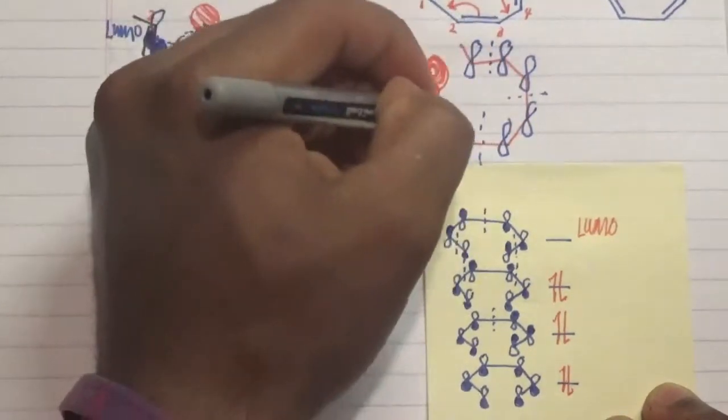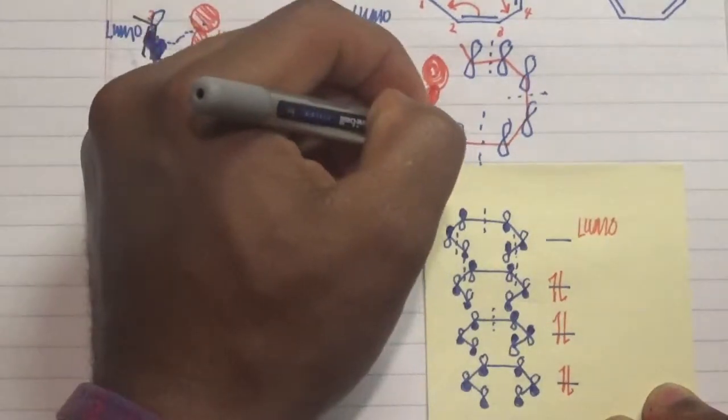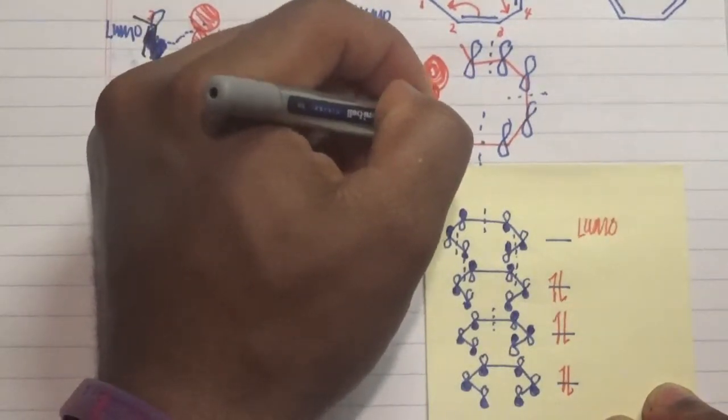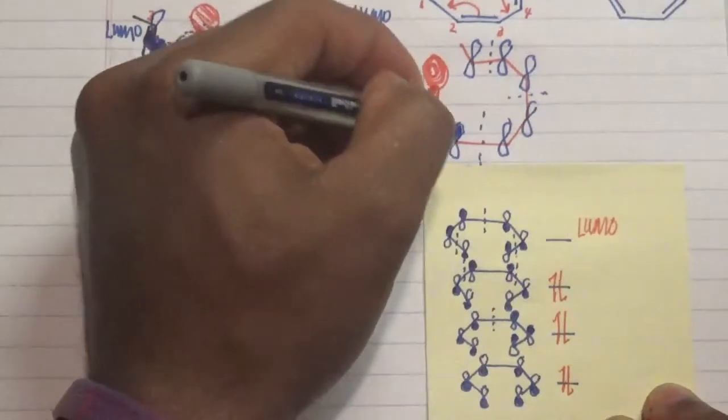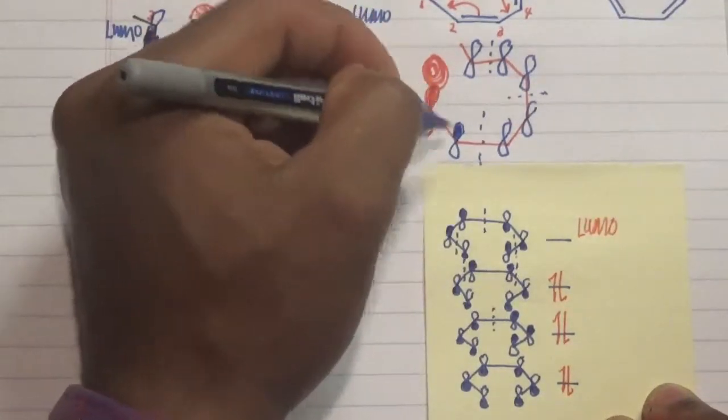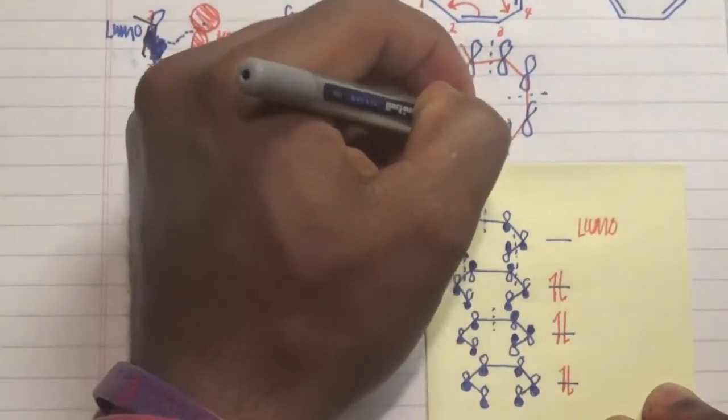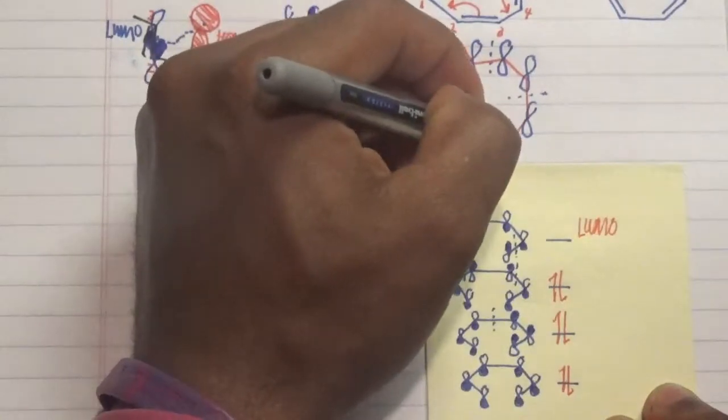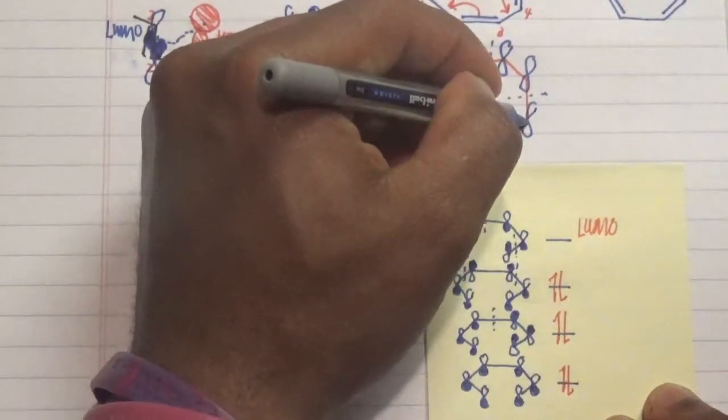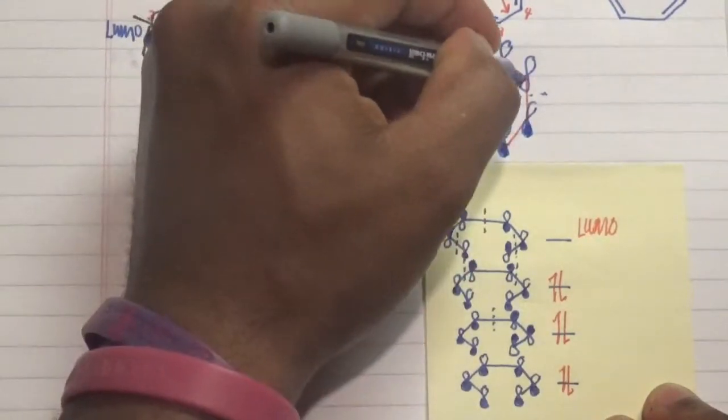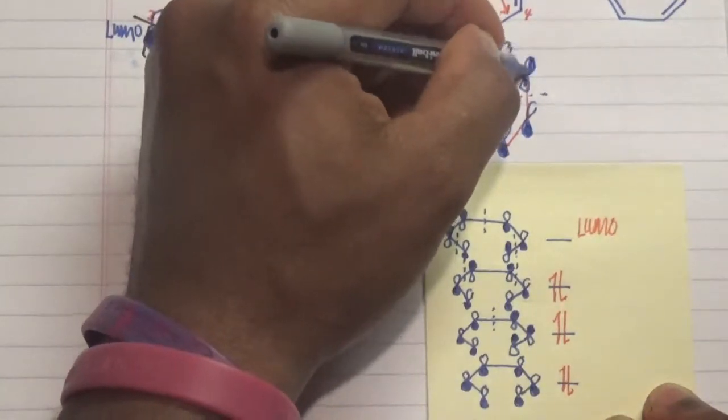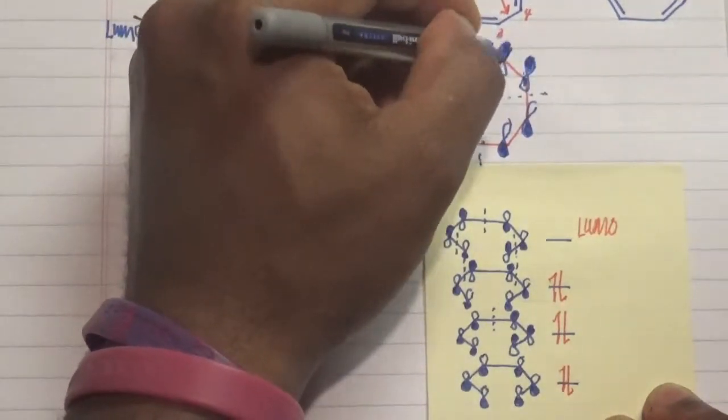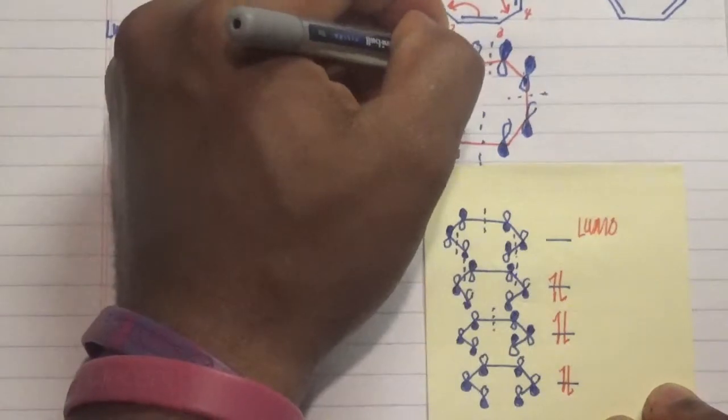So what happens in this case is that if I'm shading, this would be shaded because you want those to be bonding in this particular case and then you now continue from there. Out of phase, out of phase, out of phase with respect to that, then that.